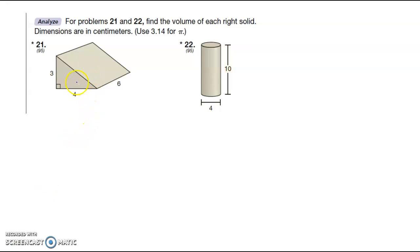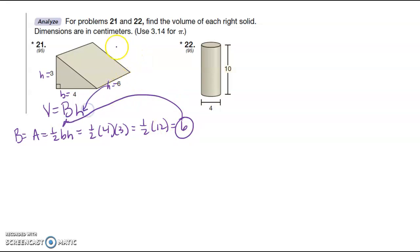Volume of each solid. We know that the volume is equal to the area of the base times the height. Here, the area of the base is 1 half base times height, which is going to be 1 half 4 times 3, which is 1 half of 12, which is 6. So I'm going to plug this in here, and then this is the height for the volume. So I end up with V is equal to 6 times 6, which is 36.